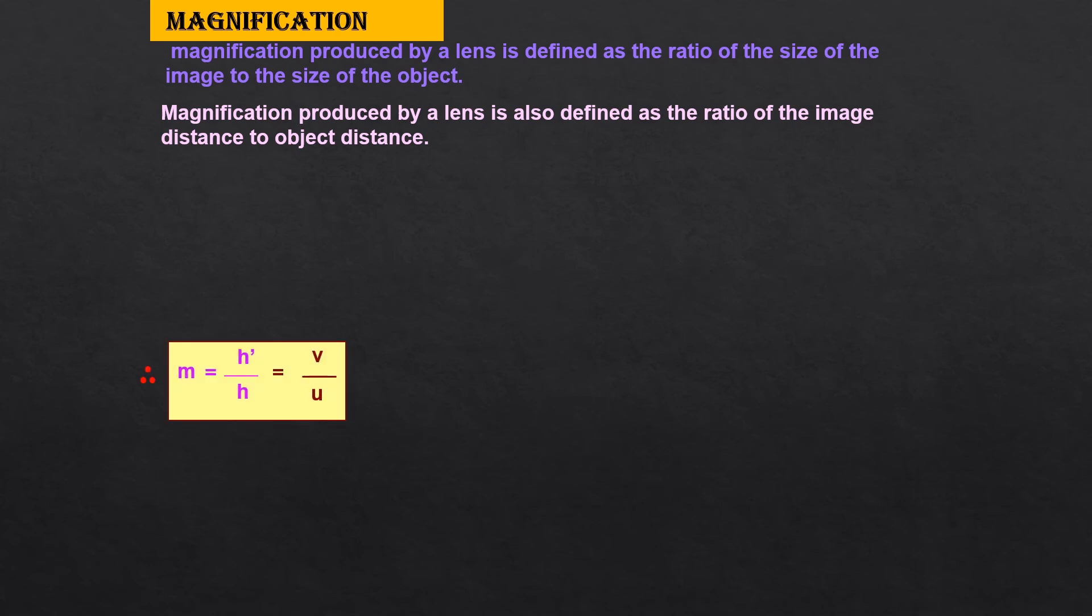So the formula is M equals H dash by H equals V by U. In the lens, magnification is with a positive sign, M equals H dash by H equals V by U, exact opposite to magnification of the mirror where there is a minus sign.